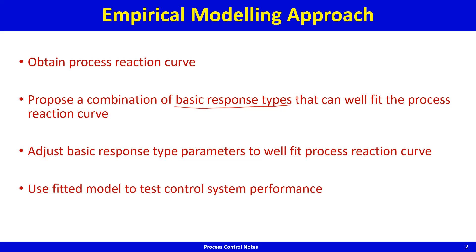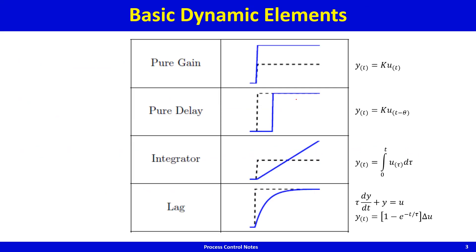That is the idea behind empirical modeling. The key thing is the basic dynamic elements that we try and combine. We have seen this before, but this time I am associating equations with the basic dynamic elements. The pure gain is essentially output equal to k times the input.